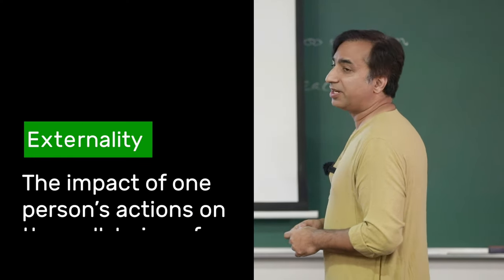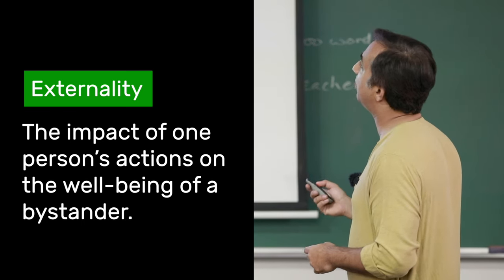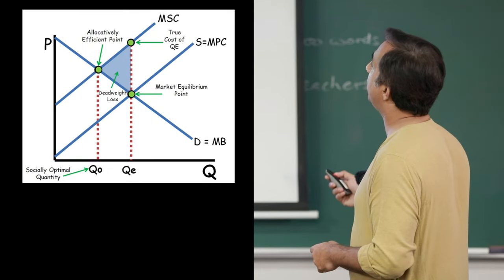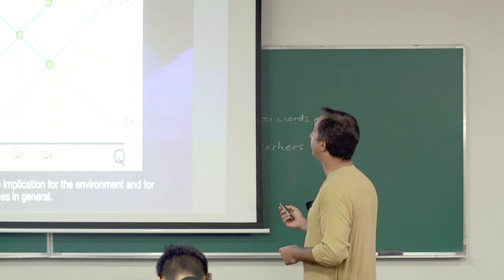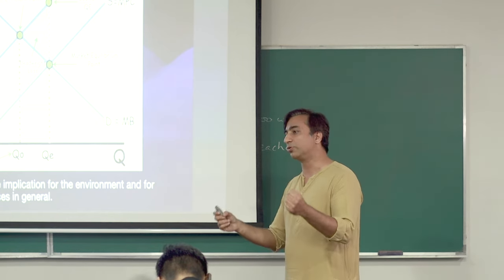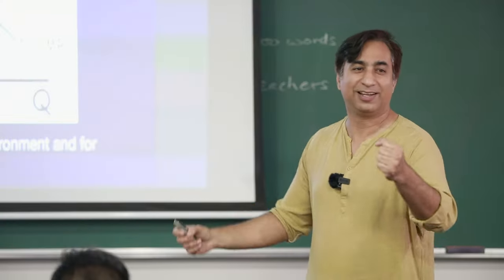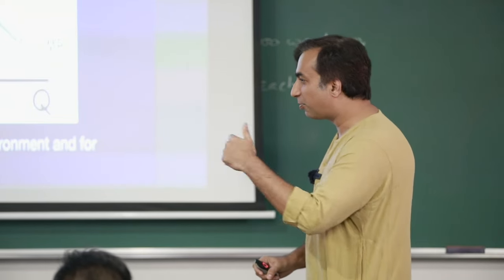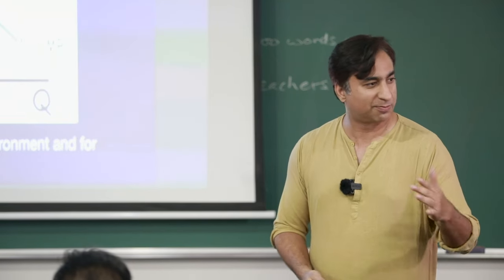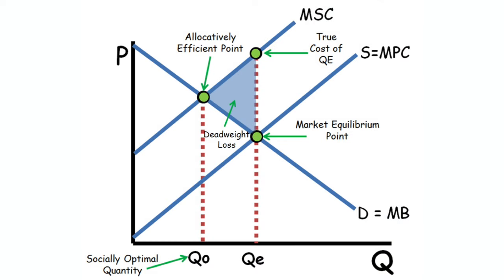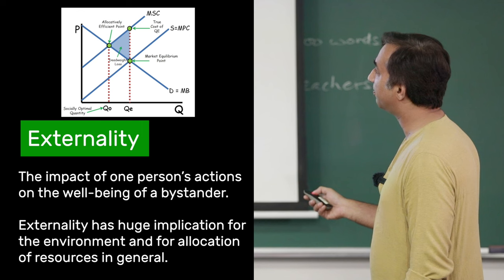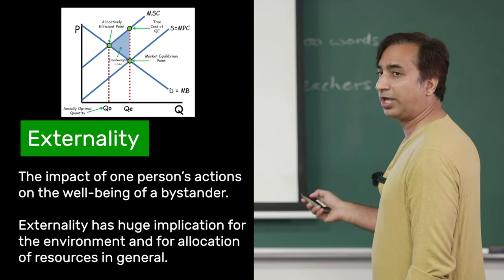An externality is the impact of one person's actions on the well-being of a bystander. There are marginal social costs and marginal private costs - and the two are not the same. For example, driving a big SUV to university: the private cost to me is the fuel I pay, but there's an added cost - the pollution I cause. That is the true social cost, which brings the marginal social cost higher than what the price mechanism calculates.